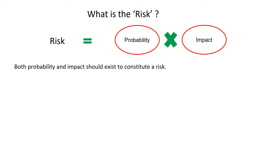In simple language, risk is the product of probability and impact. Both probability and impact should exist to constitute a risk. Let us take one example: the risk of rain damaging an equipment. How do we calculate this particular risk?